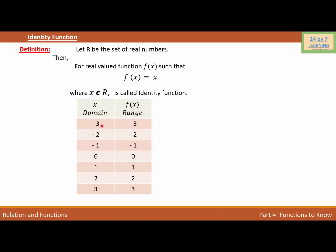The first value I'm taking is -3. For x = -3, f(x) = -3. For x = -2, f(x) = -2. For x = -1, f(x) = -1. For x = 0, f(x) = 0. For x = 1, f(x) = 1. For x = 2, f(x) = 2, and for x = 3, f(x) = 3.